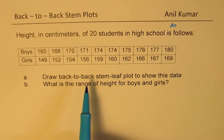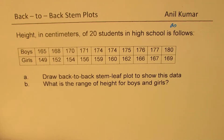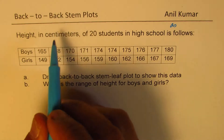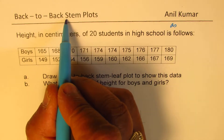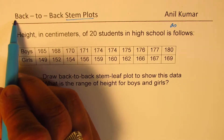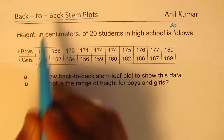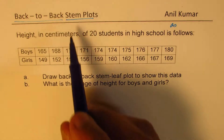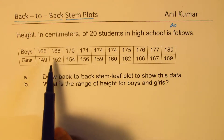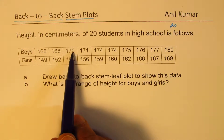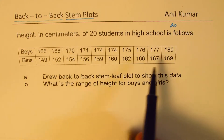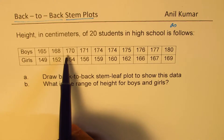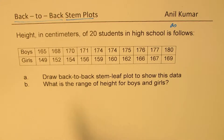Let's try to understand the concept of back-to-back and how it is related with these STEM plots. So these are two parts. When we talk about STEM plots, one number goes into the leaf part and the others remain in the STEM — that's the whole idea.